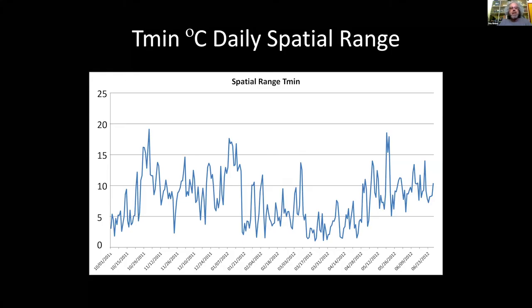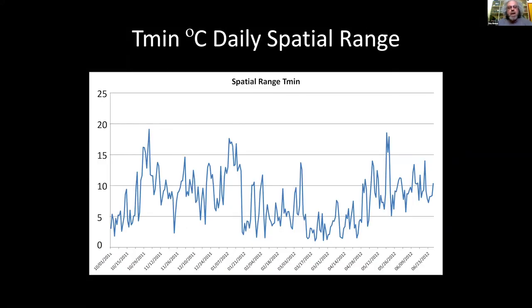This is the temperature range of T-min that we see across the preserve. On some nights it's greater than 15 degrees Celsius, and a lot of times it's greater than 10 degrees Celsius. We really need to think about this type of variability.